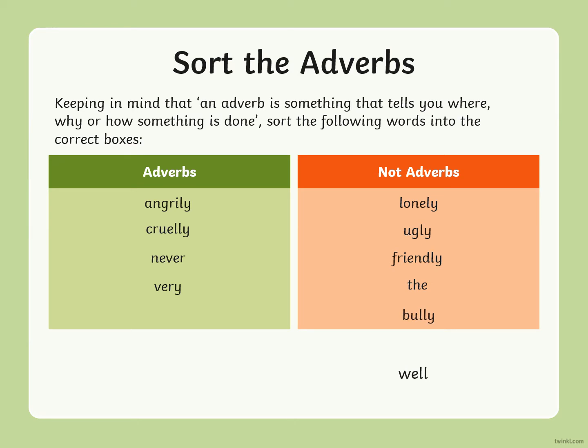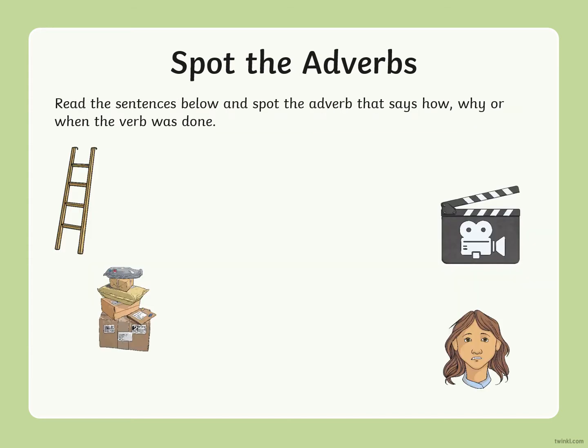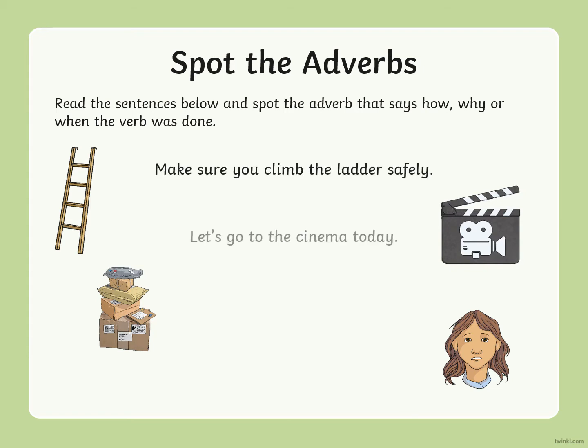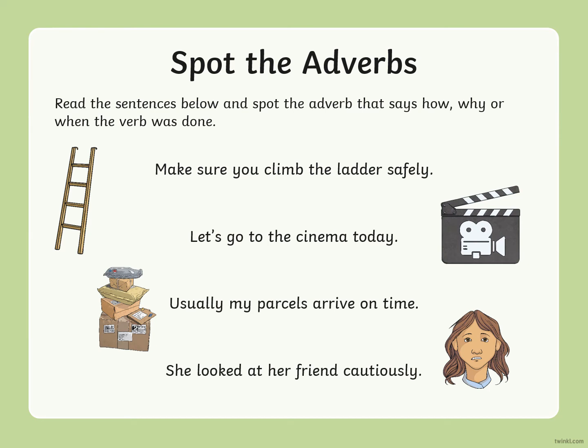The interactive tool put 'bully' in the wrong box — he did it bully doesn't make sense. I'm a little confused by some of those results, so I may need to look into that. Next activity: spot the adverbs. Read the sentences below and spot the adverb that tells you how, why, or where the verb was done.